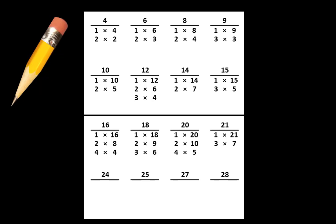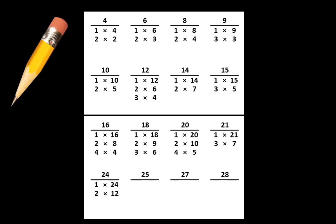Let's move to the number 24. On your paper, write that we can think of 24 as 1 x 24 or 2 x 12 or 3 x 6. Remember to pause the video if you need more time. Let's move to the number 25. On your paper, write that we can think of 25 as 1 x 25 or 5 x 5.